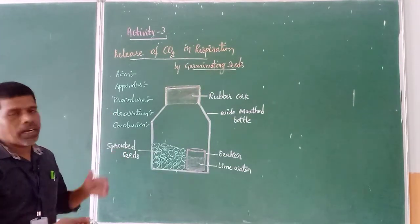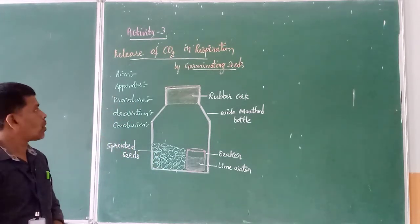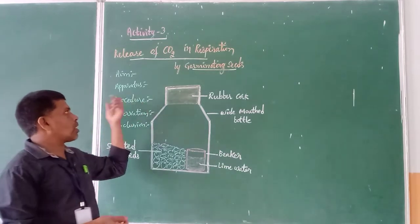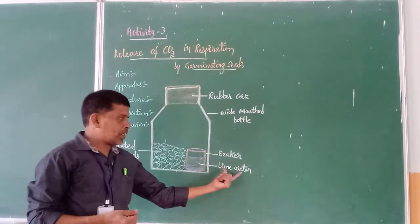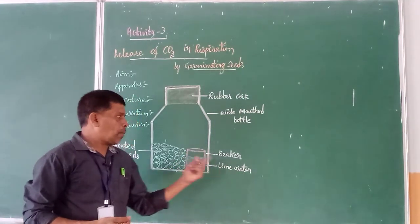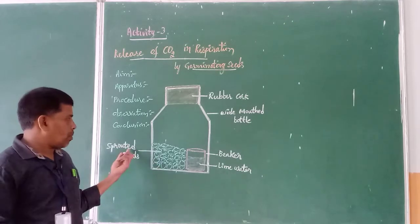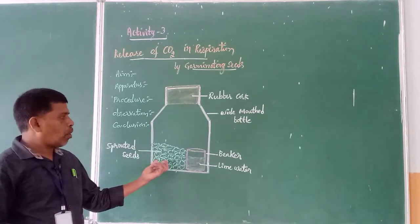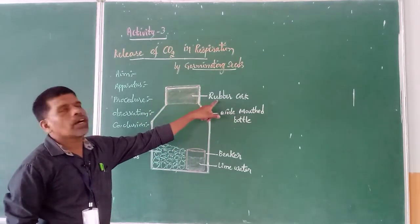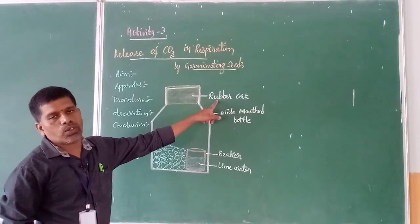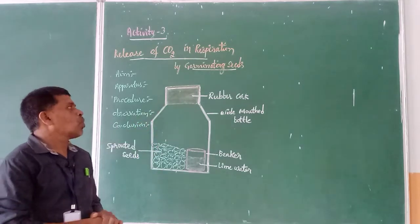Now we have the germinating seeds ready. Moving to the procedure: take one beaker with lime water and place the beaker into the wide-mouthed bottle on one side. Then take a handful of germinating seeds which are already ready, put them into the bottle, and close the mouth of the wide-mouthed bottle using a rubber cork — a tightly fixed rubber cork with no hole. Fix the rubber cork and wait for one to two days.